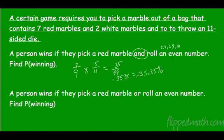Alright, what's the probability if they pick a red marble or roll an even number? So we have to add these together and subtract the overlap. So seven over nine plus five over 11 and then subtract the overlap. And that overlap is when it's both, when you win, when you do that and roll an even. So seven over nine plus five over 11 minus seven over nine times five over 11.